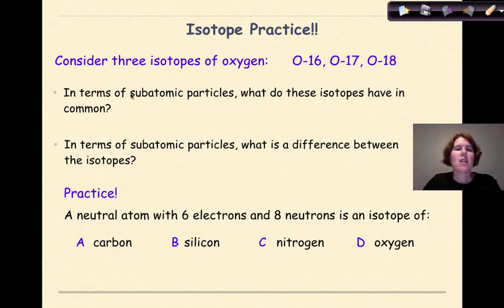Let's do some more practice. Consider three isotopes of oxygen: Oxygen-16, Oxygen-17, and Oxygen-18. I know they're isotopes because they have the same symbol. In terms of subatomic particles, what do these isotopes have in common? You have to be careful here because the question specifically asks in terms of subatomic particles. If your answer was protons, you're correct, because each of these oxygen isotopes is going to have 8 protons.